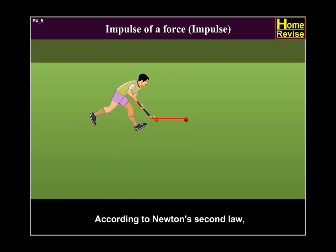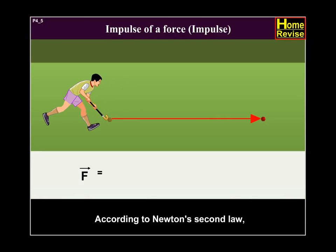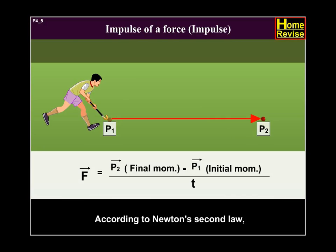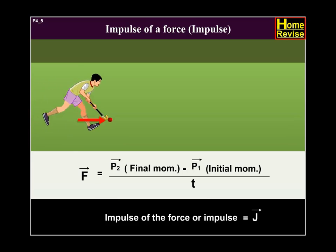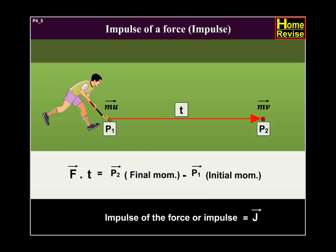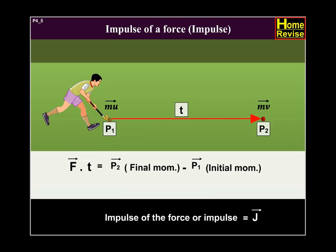According to Newton's second law, vector f is equal to vector p2 minus vector p1 upon t. Impulse of the force or impulse vector f dot t is equal to vector p2 minus vector p1 that equals to vector j that equals to m vector v minus m vector u.